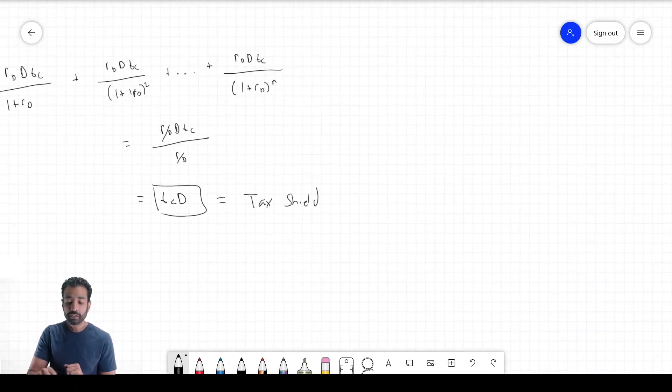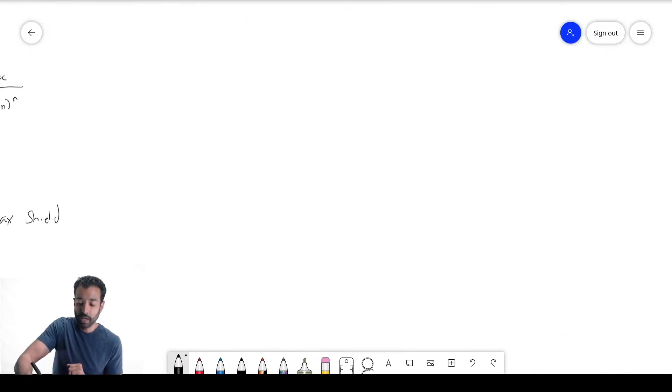Now with that behind us, we can return to the equation we had before: A equals D plus E. What I will position is that because you can take on debt, this value actually changes. Your value of your firm is actually your assets plus the tax shields generated from debt, which equals debt plus equity. This is a brand new term created by market imperfections such as taxes. The incentives for taking debt are these tax shields—you get to deduct interest and pay those out to your debt holders first, then pay taxes, which lowers the amount of taxes you end up paying.